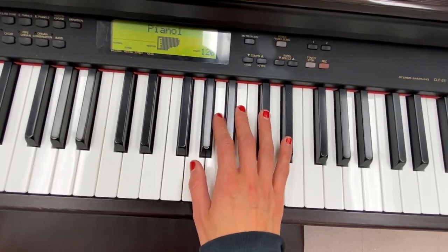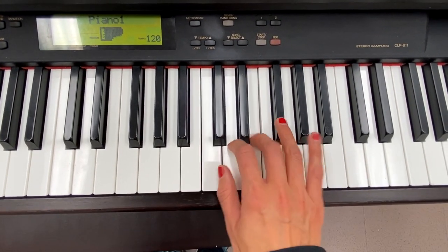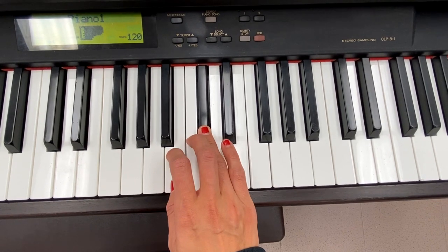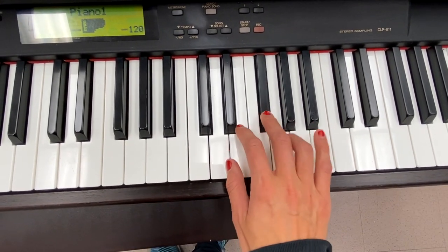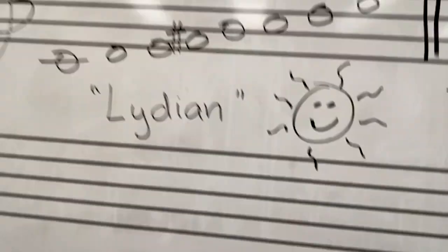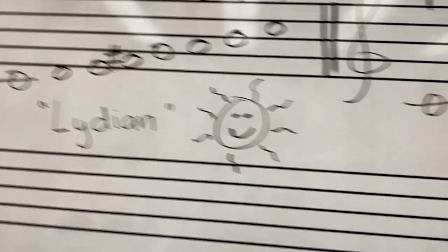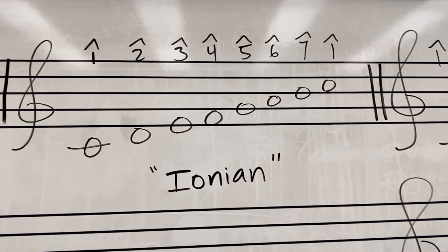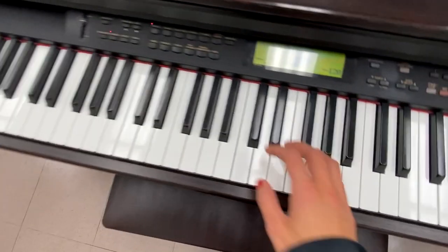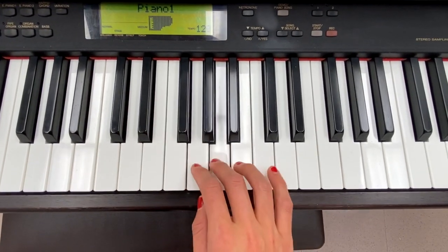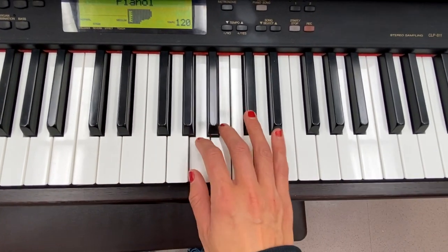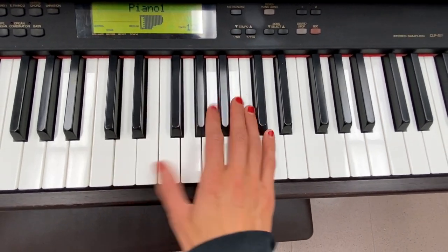I could do this in any key — so I could go to G major and sharp the fourth scale degree, giving me a C sharp. So now I'm in G Lydian as opposed to C Lydian. Ionian is just your typical major scale — it's another name for the major scale. So this is D Ionian, just D major, or G Ionian.